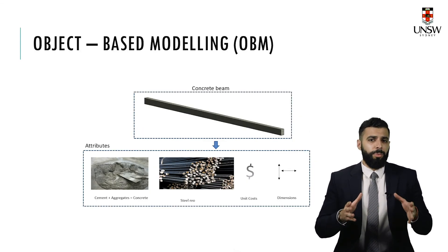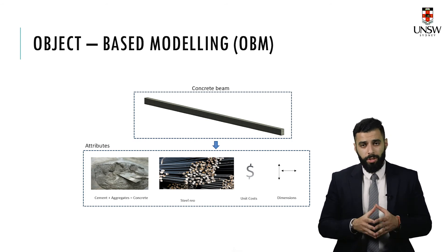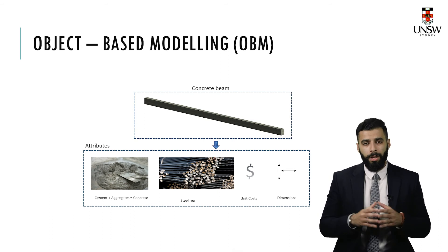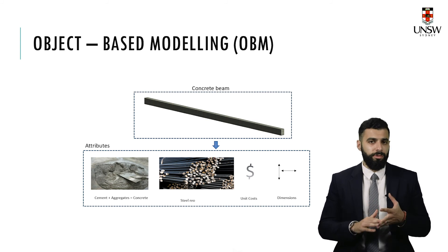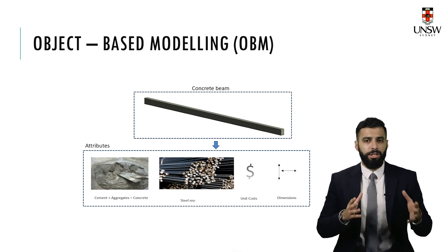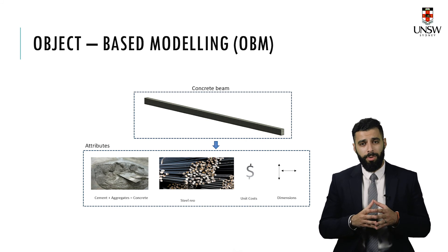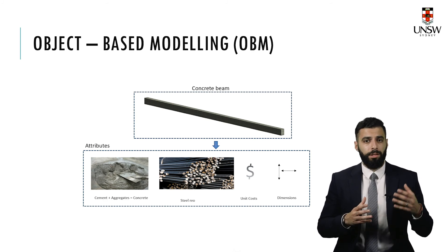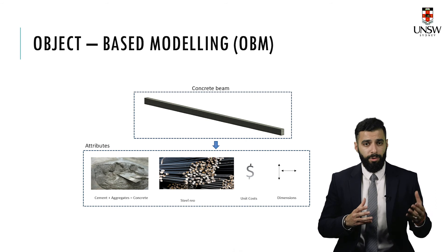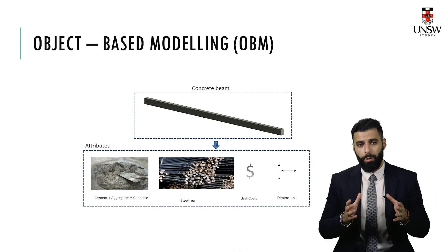Here is another simplified example of how OBM behaves. If you have a concrete beam, it has materials, geometry, and costs associated with it — all of which can be parametric. So if you decrease or increase the size of the beam, all the attributes that are impacted by that parameter, such as the length, will automatically be updated in Revit. This is not possible in AutoCAD.